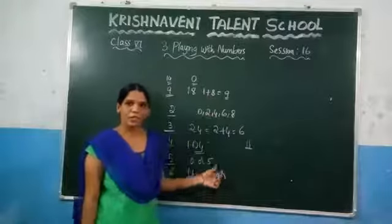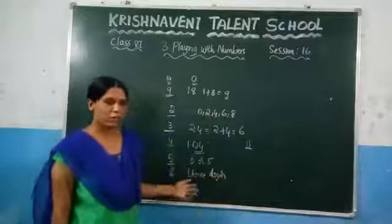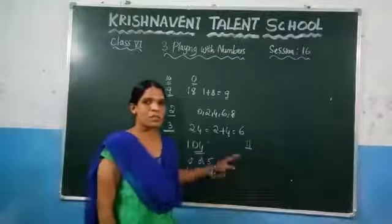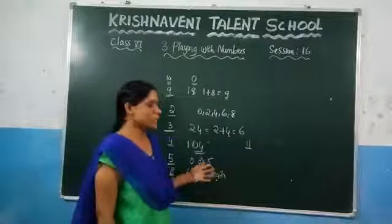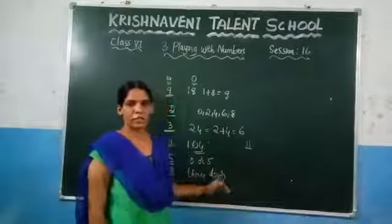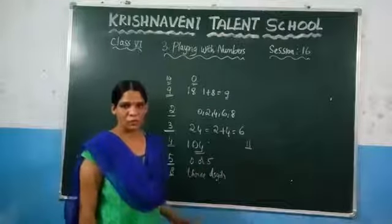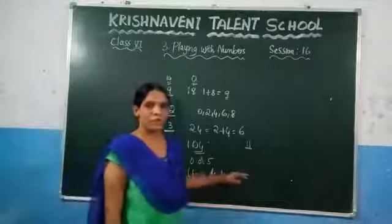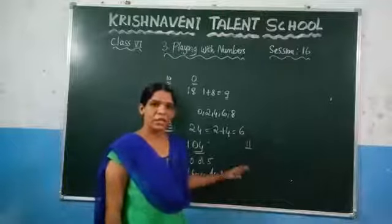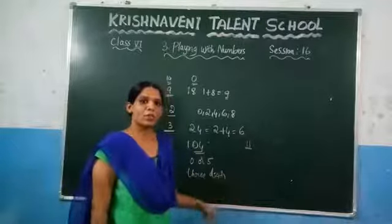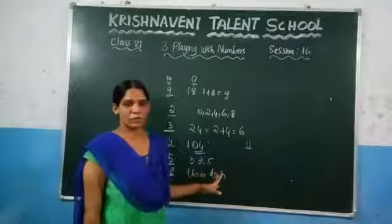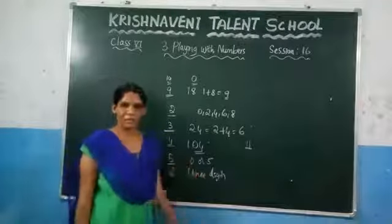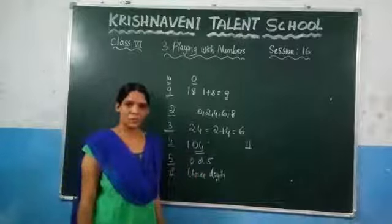And we discussed the divisibility rule for 11. What it states: you need to take the sum of the odd-position digits and the sum of the even-position digits. After that, if the difference you are getting is 0, or the number is divisible by 11, then we can say that the given number is divisible by 11.